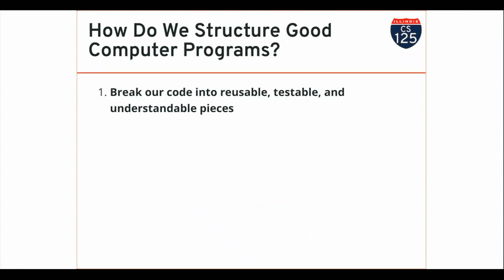We have some tools already for how we structure computer programs — breaking things down into smaller pieces. We try to write functions that each do a single thing, or at least can be tested. Now we're going to get to this second thing: how do we model data? How do we model real-world entities? Real-world entities typically have state — a variety of different pieces of information we might want to know about them — and they also do things. Object systems, like Java's, allow us to model both of these components of real-world entities: state and behavior, data and algorithms.